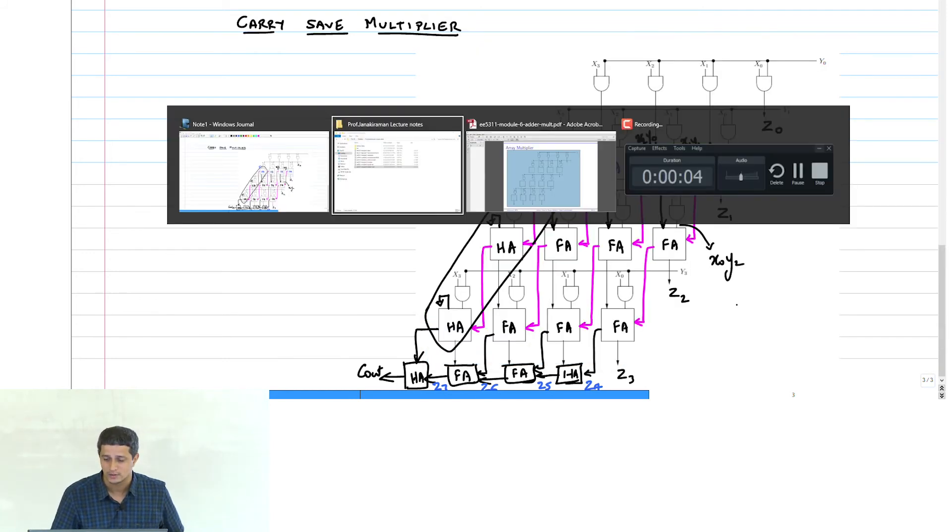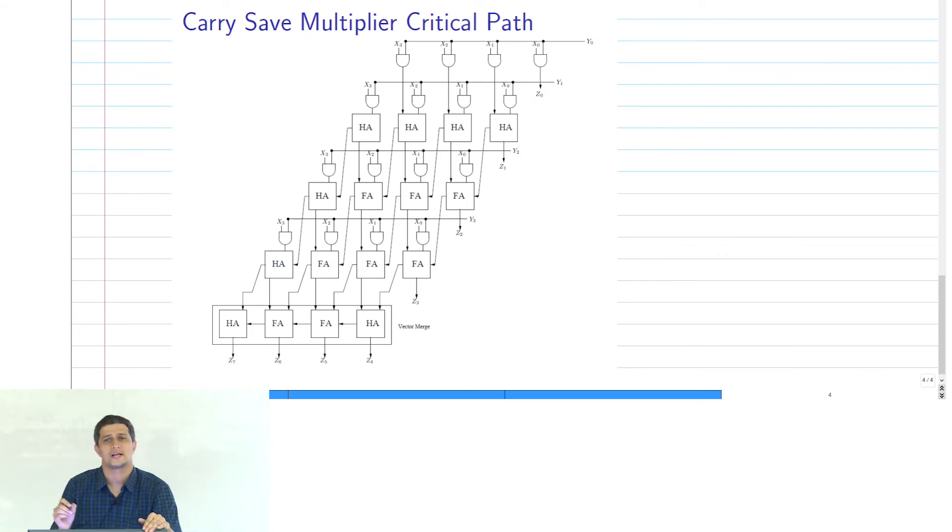Any other questions on the carry save multiplier just the construction right. Now we will go ahead and do this critical path analysis. So now let us do the same exercise: t_AND equals 1, t_sum equals 1, t_carry equals 1 just for an example here. So let us now put the arrival times. Output of all AND gates is 1 arrival time. So this will be 1, 1, 1, 1, 1, 1, 1 right, this will also be 1. Now what about the first row when will the sum be ready? z_1 when will the sum be, when will the carry be ready? 2 right.